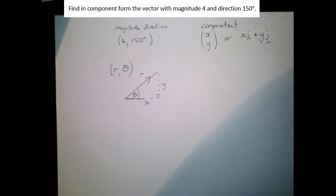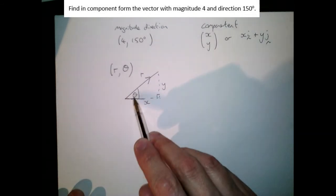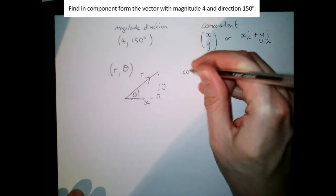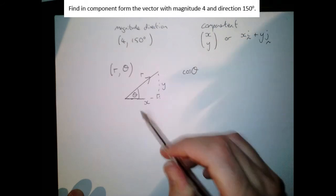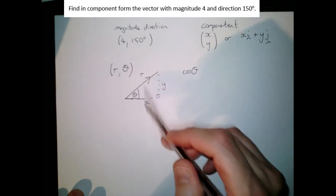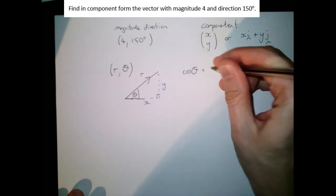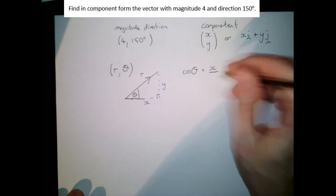We know for example that the cosine of the angle theta, cos theta, is remember that's adjacent over hypotenuse from the GCSE stuff, so that is adjacent which is x over hypotenuse which is r.